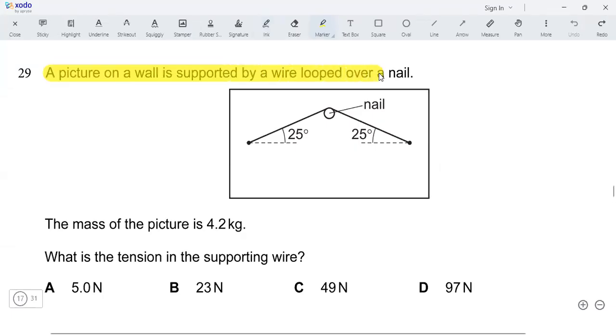A picture on a wall is supported by a wire looped over a nail. The mass of the picture is 4.2 kilograms. What is the tension in the supporting wire?